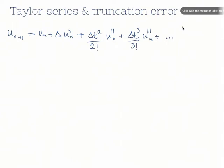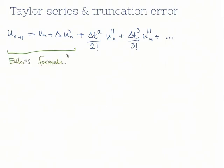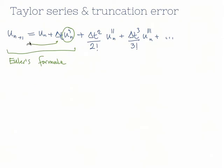You can see that these first terms are exactly equal to our Euler formula. But the Taylor series has these other higher-order terms. To see the error in the approximation of the derivative by what we call a finite difference, we're going to isolate u prime n on the left hand side by dividing through by delta t, then subtracting u n.